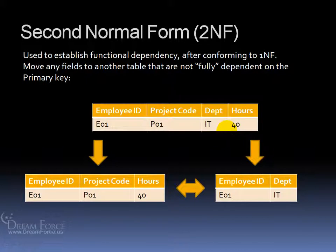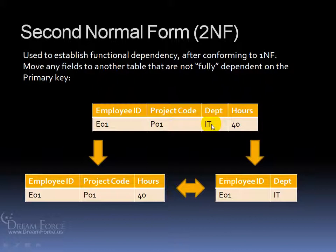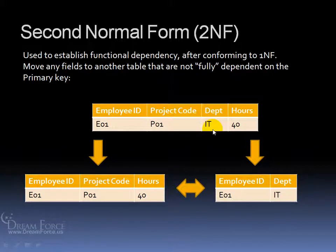Next, after you finish the First Normal Form, we have the Second Normal Form, and that's used to establish functional dependency after conforming to the First Normal Form. What you want to do is move any fields to another table that are not fully dependent upon the primary key. We have a table here with the Employee ID, the project code, and the hours, because those are all dependent upon the Employee ID. The project and hours can be broken down into a table all on its own, and the department can be in a table on its own as well. Make sure any field not fully dependent upon the primary key — where the majority of fields have a common theme, like the project and hours worked — put that in a separate table, and then anything else, like the department, in another table.